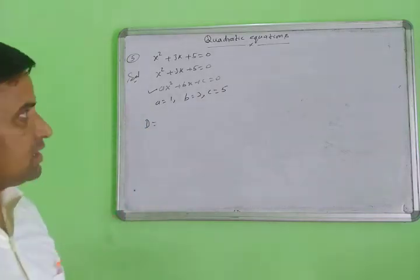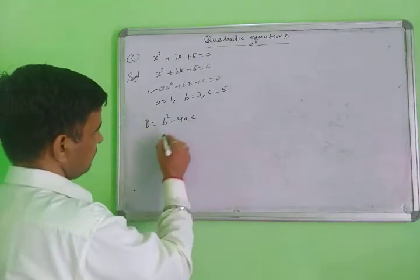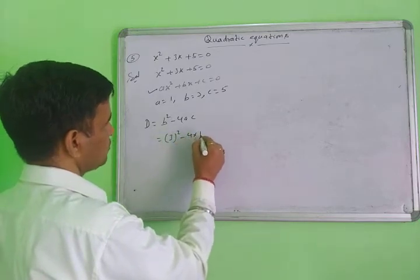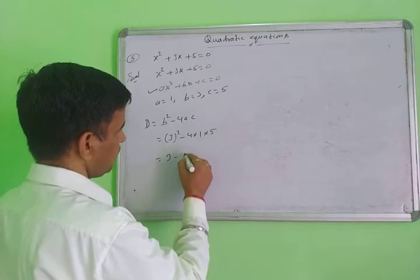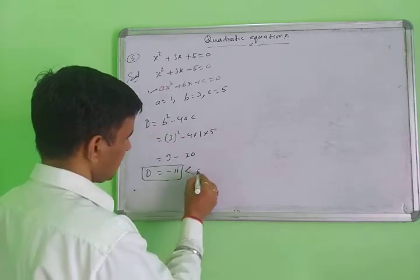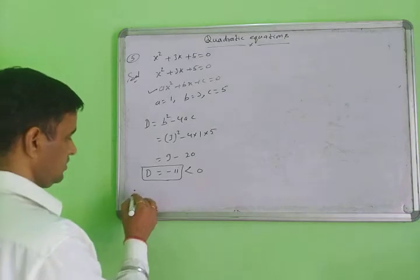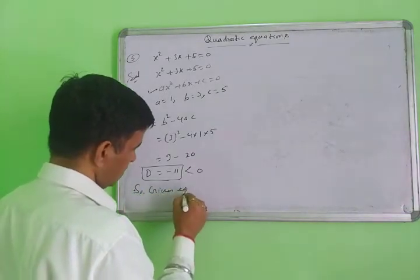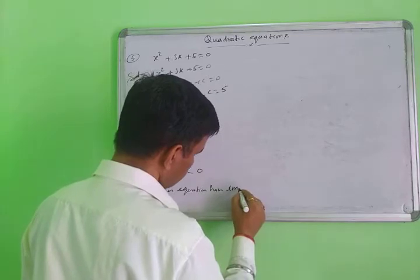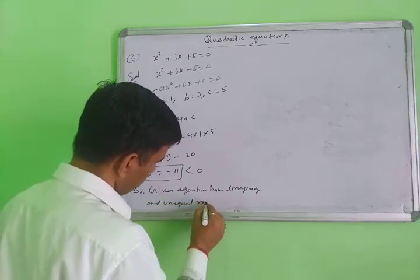First we check the discriminant: D = b² − 4ac = 3² − 4(1)(5) = 9 − 20 = −11. Since D = −11 is less than zero, the given equation has imaginary and unequal roots.